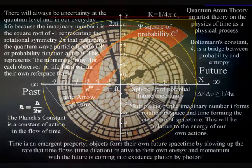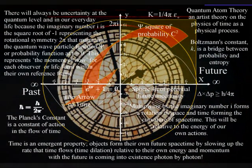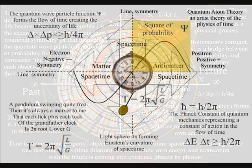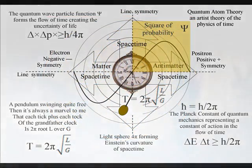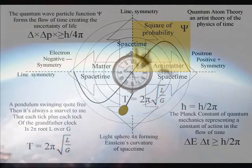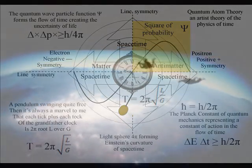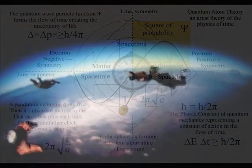Objects form their own time by slowing up the rate the time flows relative to their energy and momentum. Gravity is not a real force at all. Objects just free fall towards the greatest energy because it has the greatest time dilation or the slowest rate the time flows.